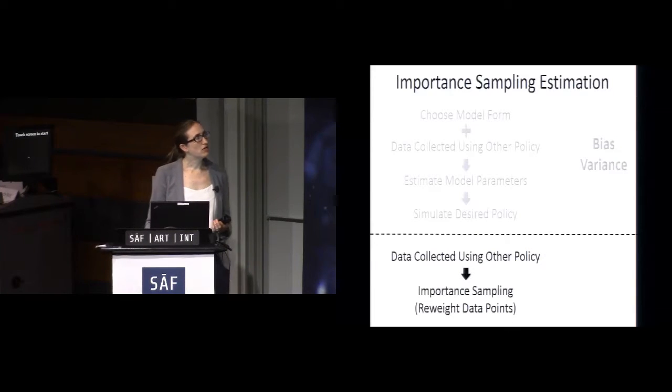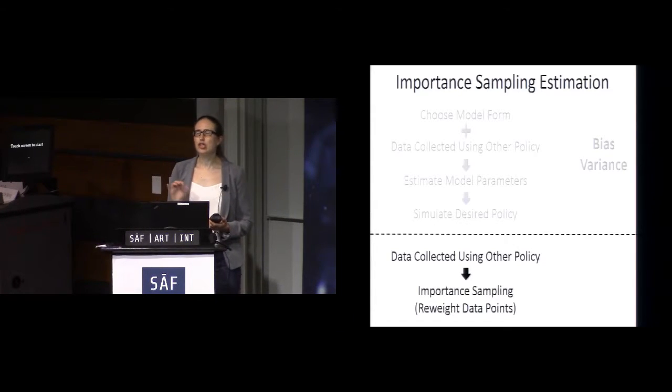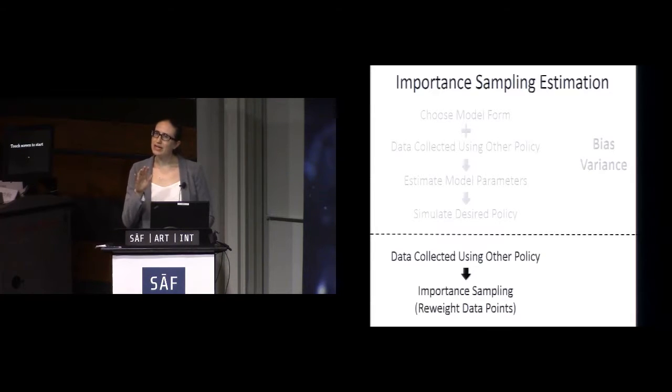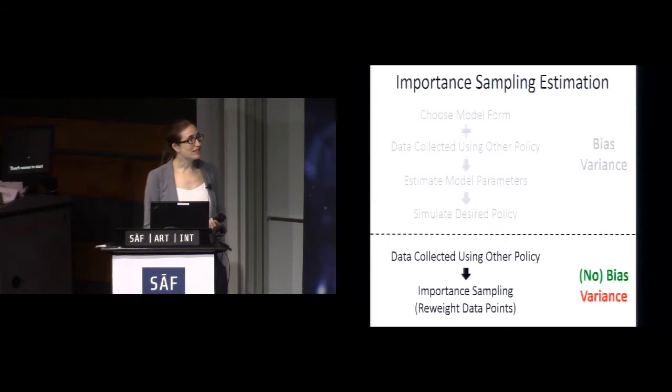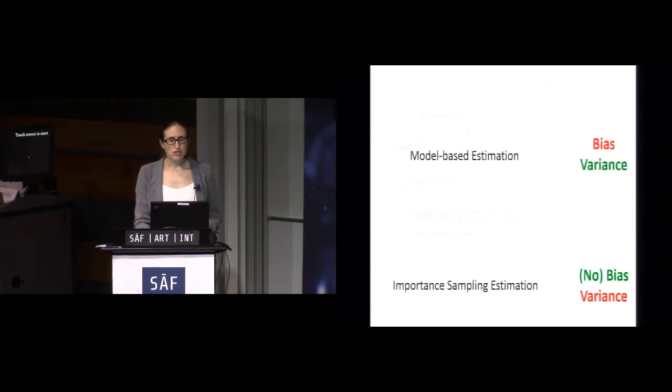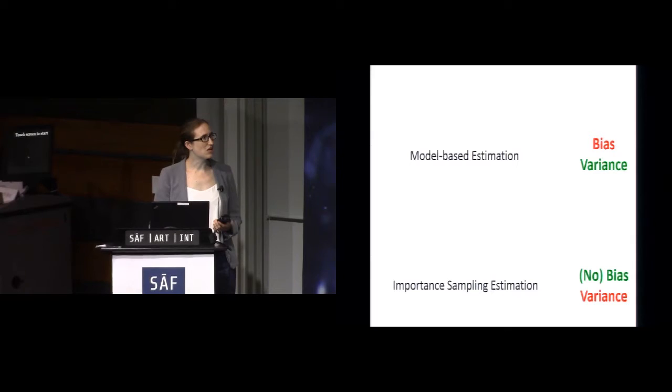Here's another extreme, known as importance sampling estimation. The idea in this case is to take our data collected from the other policy and not use any model at all, and directly try to re-weight that data to make it look as if it was from the distribution of data you'd get if you were to follow the policy you really care about. Essentially it's just up-weighting the data that looks more like the policy that you want to deploy and less like the policy that you actually collected it under. This is a very elegant idea. It's been used in statistics extensively. People like Doina Precup have been using it in the context of reinforcement learning for over a decade. The great thing about this is that if you have a lot of data, it's an unbiased estimator, it will converge to the right answer, but the variance can be enormous. The variance can be so high that your estimator is nonsensical. It doesn't give you any information about whether or not you should deploy this policy.